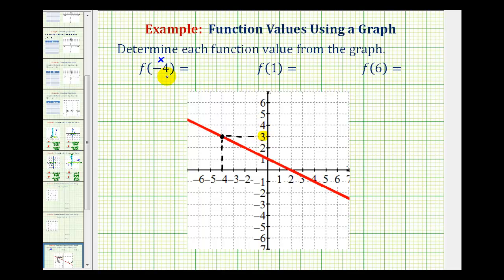So f of negative four is equal to three. It's important to recognize that this means the function contains the point with an x-coordinate of negative four and a y-coordinate of three.